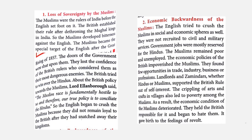Second: economic backwardness of the Muslims. The English tried to crush the Muslims in social and economic spheres as well. Muslims were not recruited to civil and military services, and government jobs were mostly reserved for the Hindus. All the government doors were closed for Muslims but open for Hindus. The Muslims remained poor and unemployed because the Britishers did not trust them.